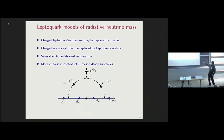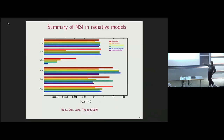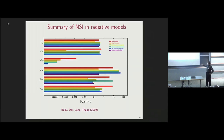One can do a similar exercise with the leptoquark. A summary analysis of some 20 different models shows the NSI predicted by each — the BM model gives the largest NSI among the studied models. Off-diagonal NSI, for example epsilon_{e mu}, is highly constrained by mu → 3e and mu → e gamma constraints, but some parameters like epsilon_{tau tau} are allowed to be at the level of 30–40%.